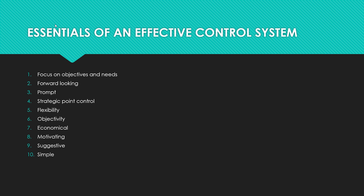Seventh: economical — the control system should justify the expenses involved; savings anticipated should be greater than the expected cost of its working. Eighth: motivating — control should motivate both the controller and the controlled, used in a positive sense to help employees improve their performance. Ninth: suggestive — a sound control system must not only point out deviations but also lead to corrective actions to control undesirable deviations. Tenth: simple — a good control system must be simple and easily understandable; complicated techniques fail to communicate the meaning of control data to managers.